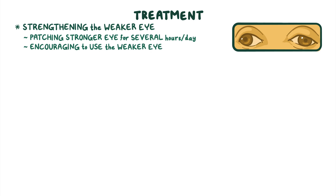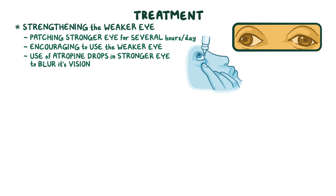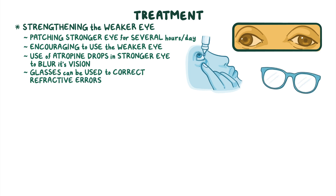Another technique involves the use of atropine drops in the stronger eye to blur its vision, thus encouraging the use of the weaker eye. Glasses can also be used to correct refractive errors.